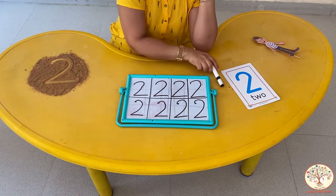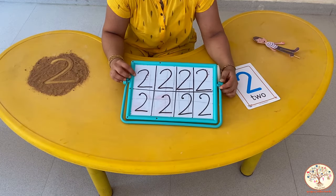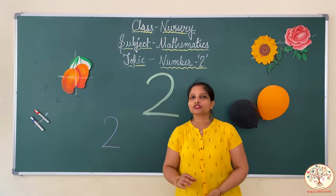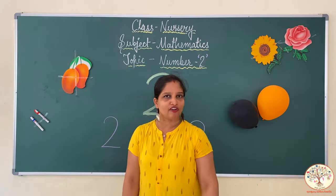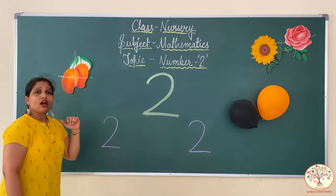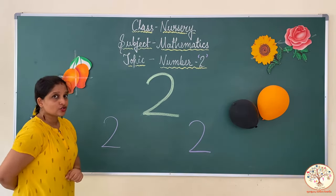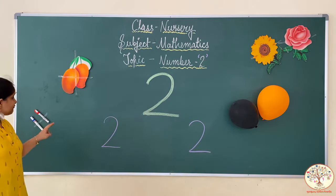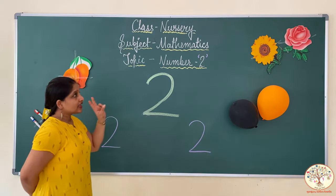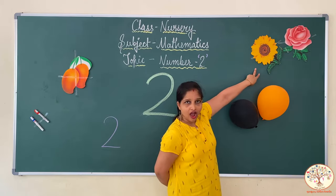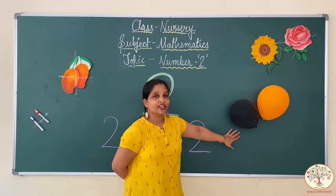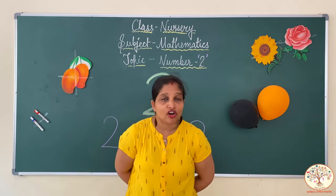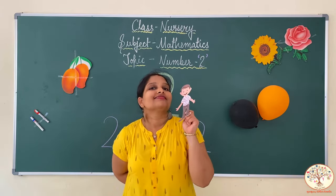So kids, what is the number? This is number 2. We have learnt all about number 2 today. Let's have a fast recap. We learnt how to count number 2 with 2 mangoes, then 2 flowers, then 2 pens, and then 2 balloons.